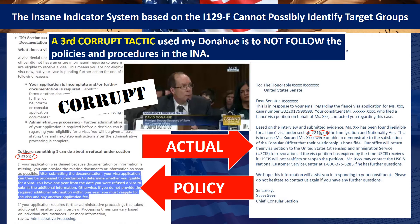A third corrupt tactic used by Donahue is not following policies. INA Section 221(g) states that after submitting documentation, your application can be processed and you have one year from the date of refusal to supply missing information. But in practice, the consulate doesn't wait a year or tell you what's missing — they just return your packet to USCIS, exploiting bureaucratic rules.